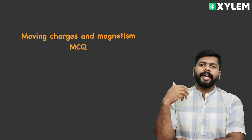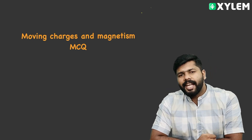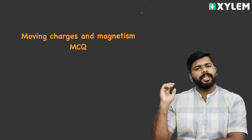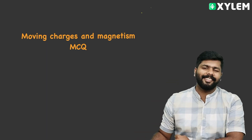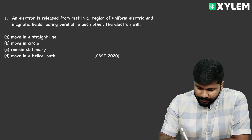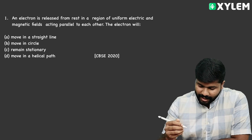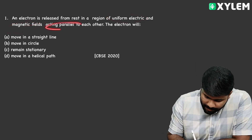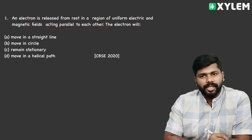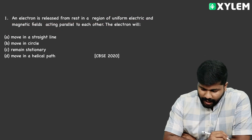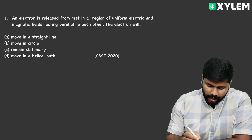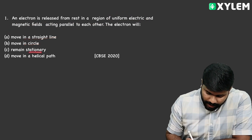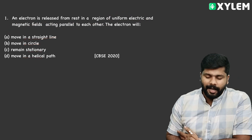We will discuss how many things are made. Please comment. That question is ready. An electron is released from rest in a region of uniform electric and magnetic fields acting parallel to each other. The electron will — what does the electron experience? The options are: move in a straight line, move in a circle, remain stationary, or move in a helical path.